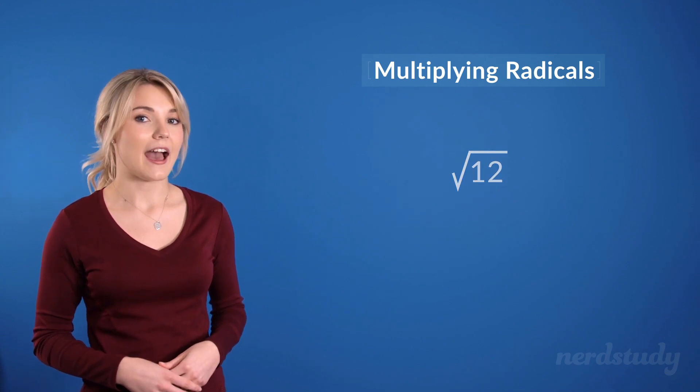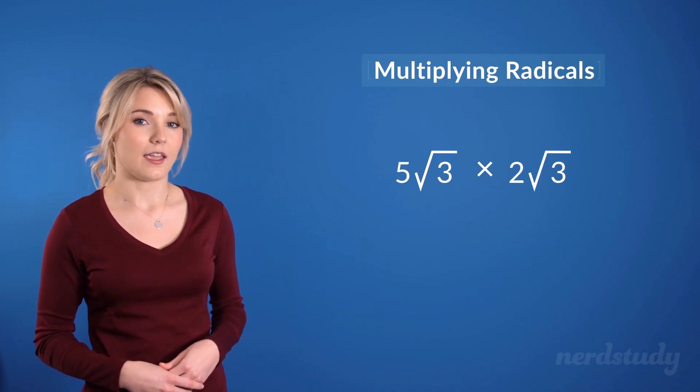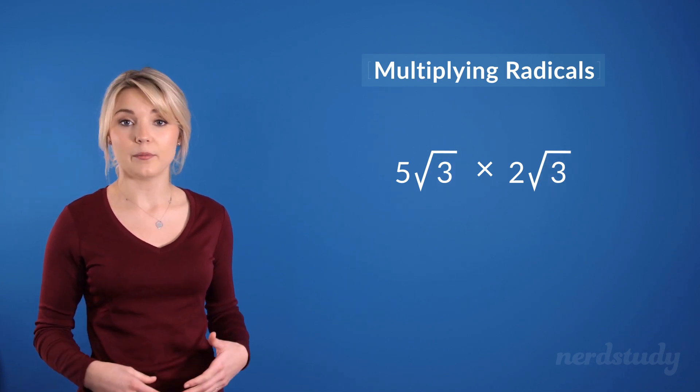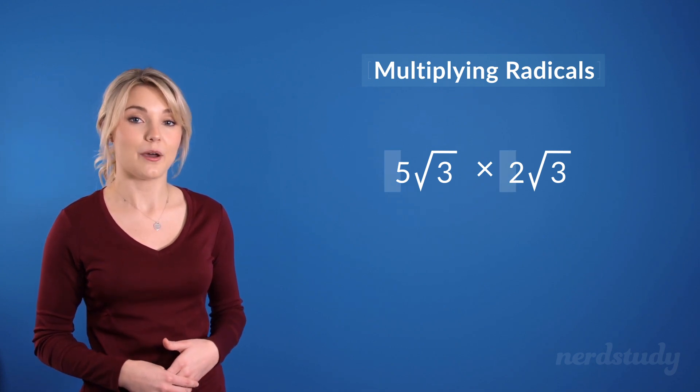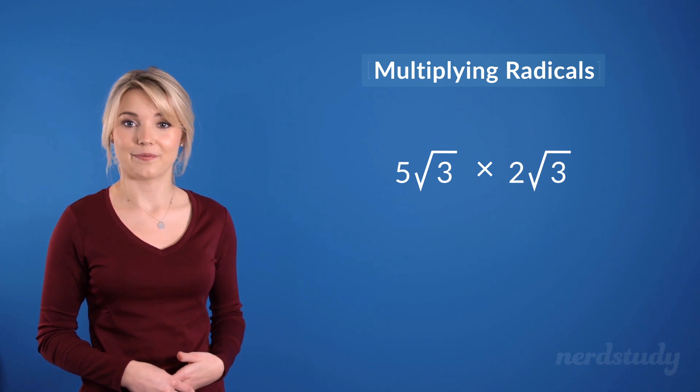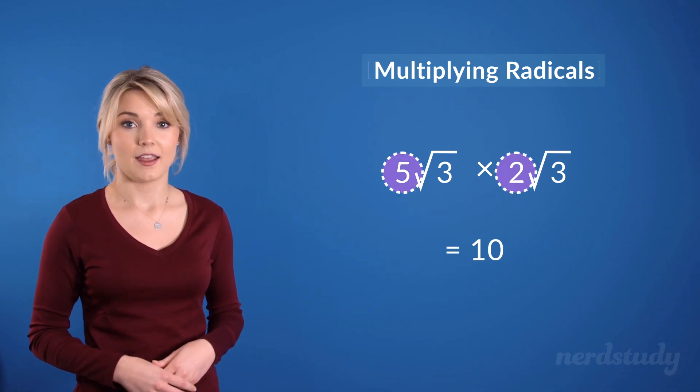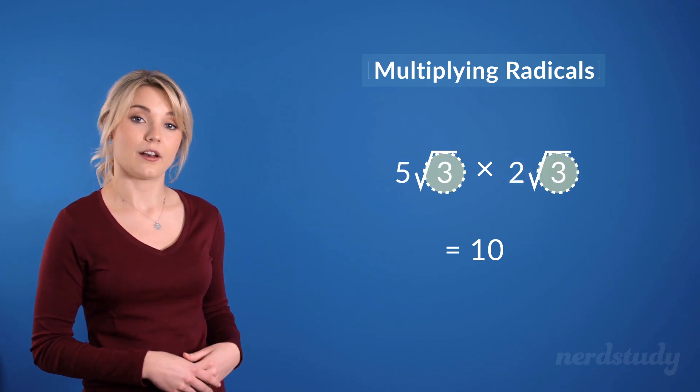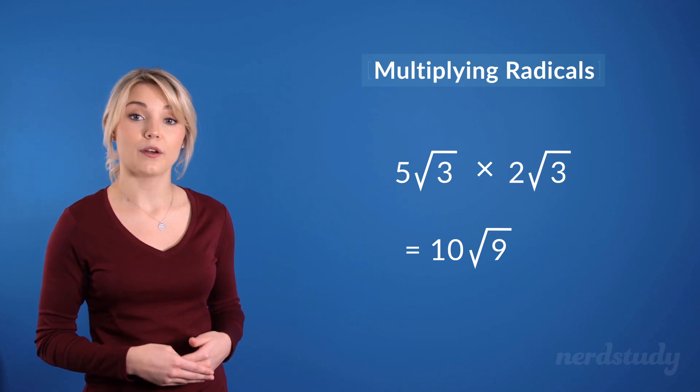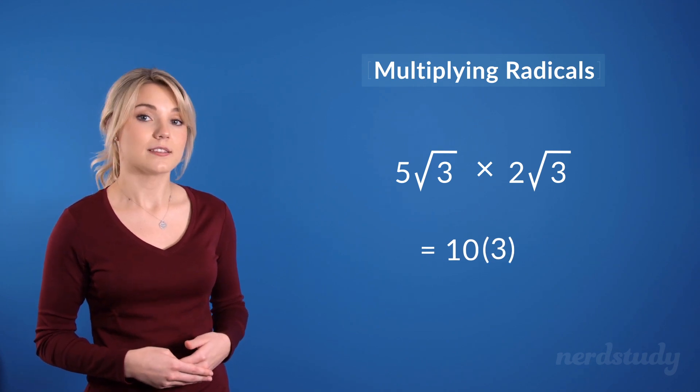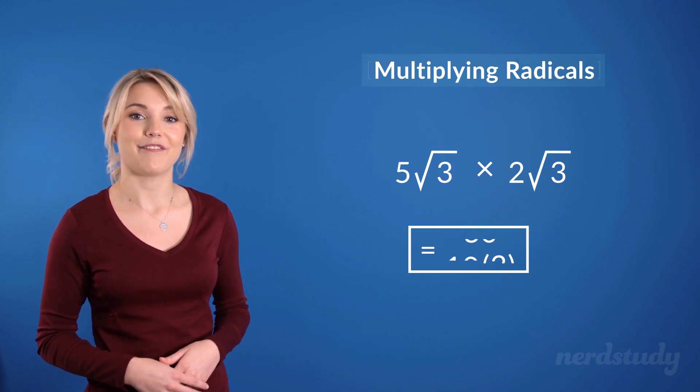And what if we had 5 root 3 times 2 root 3? Here we can do the same thing by multiplying whatever is inside both radicals as well as multiplying both numbers on the outside of the radicals with each other. So what we'd get is 5 times 2 to get 10 and 3 times 3 under the radical sign to get 9. But there's one more thing and that is that we know the square root of 9 is 3. So we can simplify that and when we compute what's remaining we get a final answer of 30.